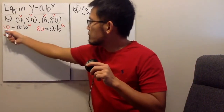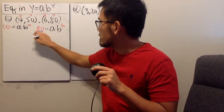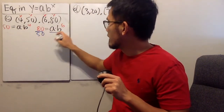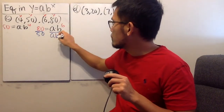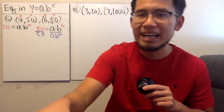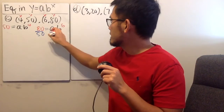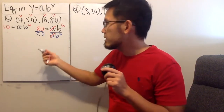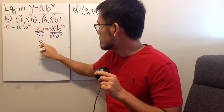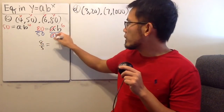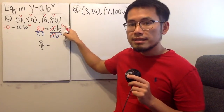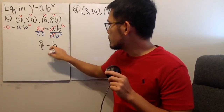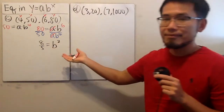We divide the second equation by the first: 80 divided by 50 on the left, and the right-hand side divided by a times b to the fourth power. The a's cancel, and 80 divided by 50 is 8 over 5. That equals b to the 6th over b to the fourth, and subtracting the powers gives b squared.